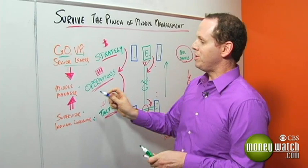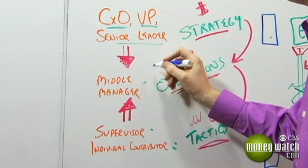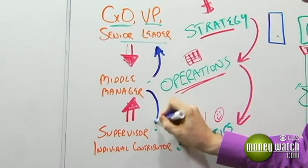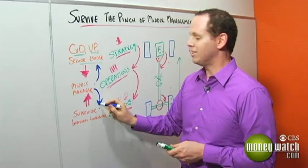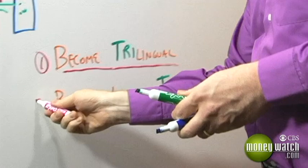You need to speak these languages because whenever you speak to somebody, you need to speak to them in their native language. When you talk to CEOs and senior leaders, talk to them in terms of strategy first. When you talk to supervisors and individual contributors, talk to them first in terms of tactics, always in the native language.